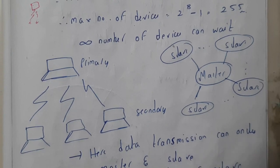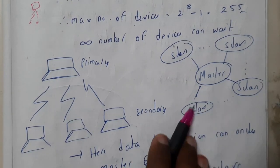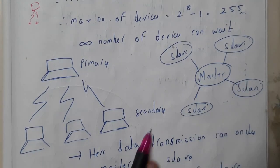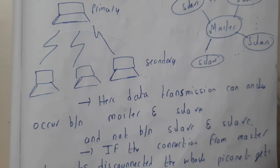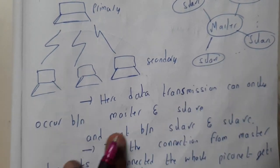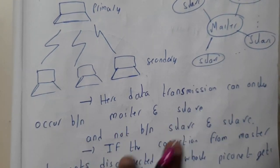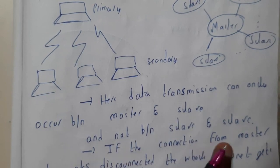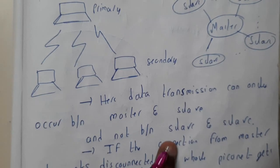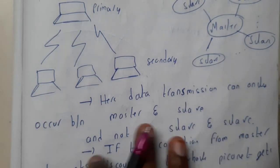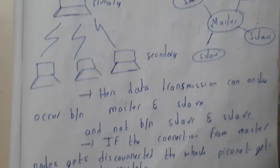For a small example — this will be our master and these will be our slaves. The master will be sending the information to different slaves. Data transmission can only occur between master and slave, and not between slave and master. A master can only send data to a slave, whereas a slave cannot send data to another slave or send data back to the master.